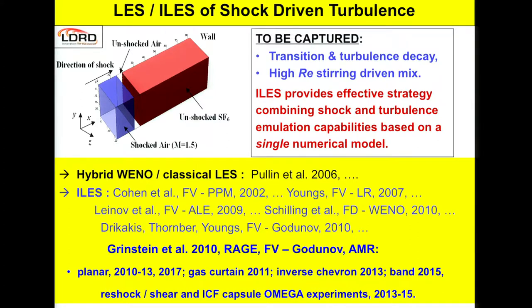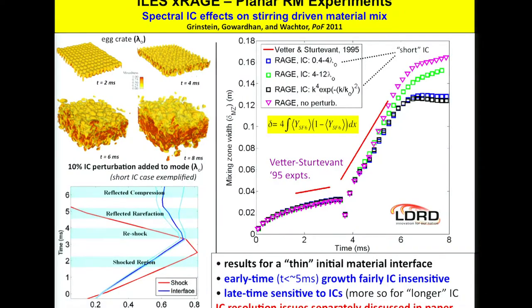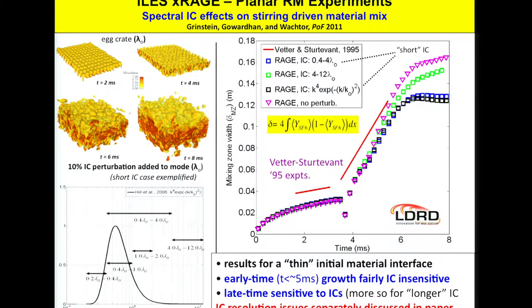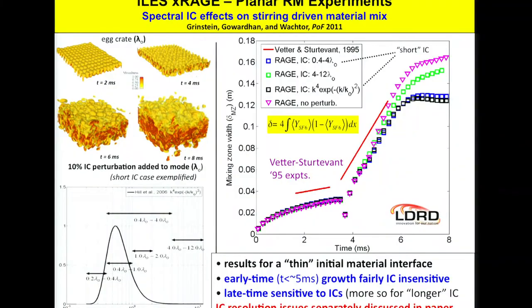ILES has been very effective for shock-driven turbulence problems because it gives a way of emulating both the turbulence and the shocks. We've been trying different configurations leading to the ICF capsule problem. One issue found: you start with different initial conditions — an egg-crate with a characteristic wavelength lambda_0, plus noise that's present in the experiment but whose exact form you never know precisely. You can try different wavelength ranges. Dale Pullin has done similar simulations, and this is the Vortex Stirrup experiment at Caltech.